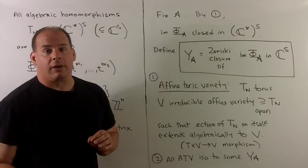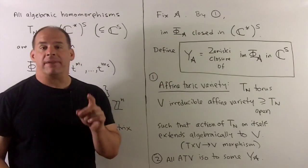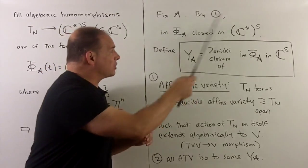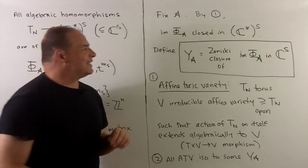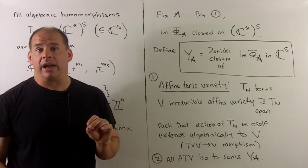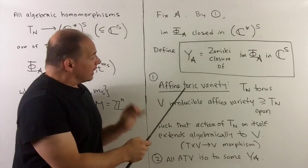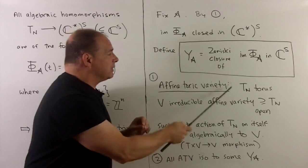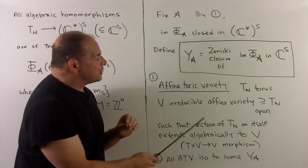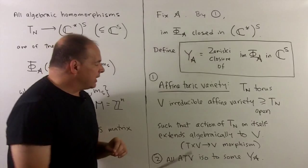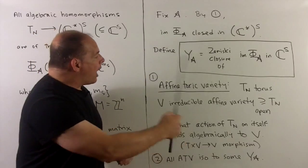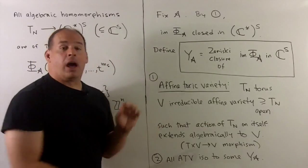To define affine toric varieties, we pick one of these sets A. By fact one about complex tori, the image φ_A is going to be a closed torus in C*^S. To get an affine toric variety, we take this image and take the Zariski closure in C^S. That essentially gives us all affine toric varieties. In general, an affine toric variety starts with torus T_N; V is an irreducible affine variety containing T_N as an open subset, and the action of T_N on itself extends algebraically to V, meaning the group action is given by a morphism. All affine toric varieties defined this way are going to be one of the Y_A's up to isomorphism.